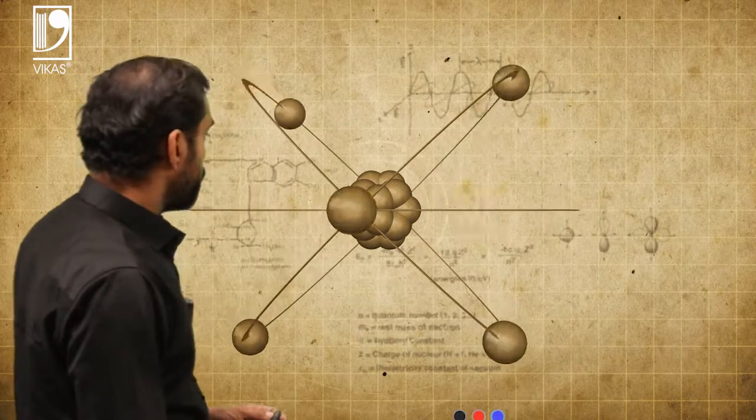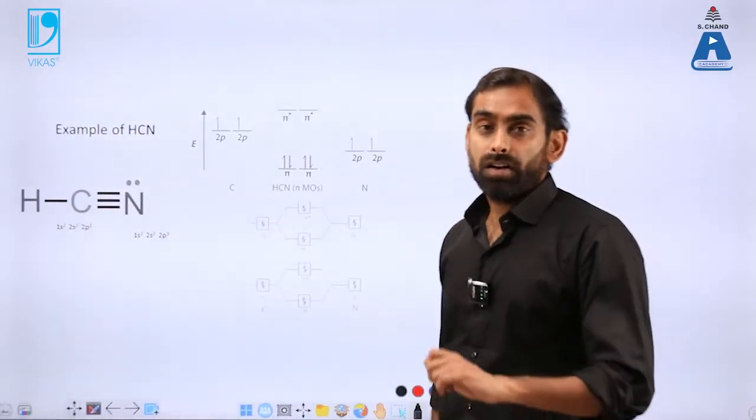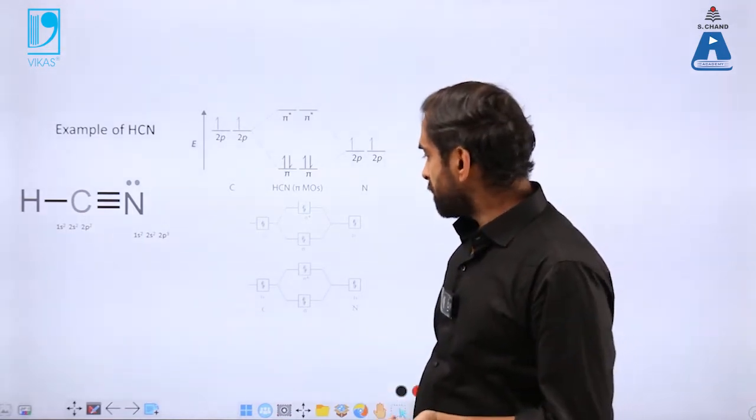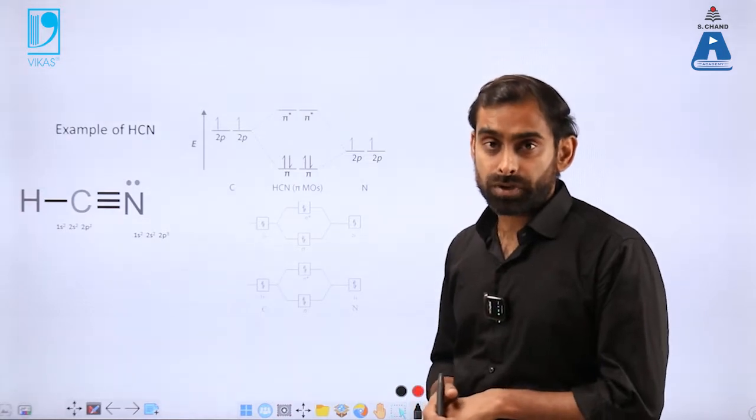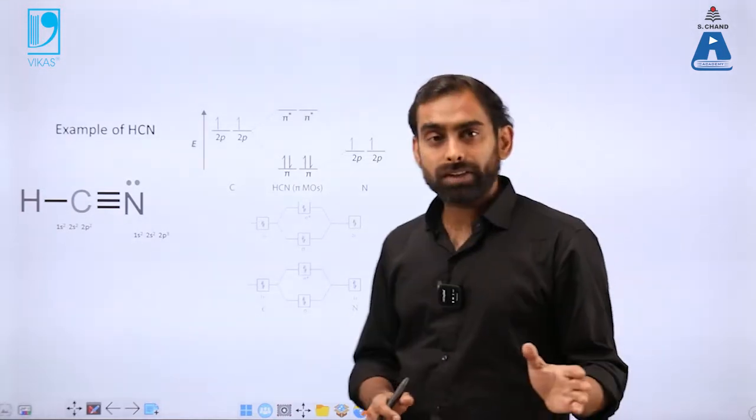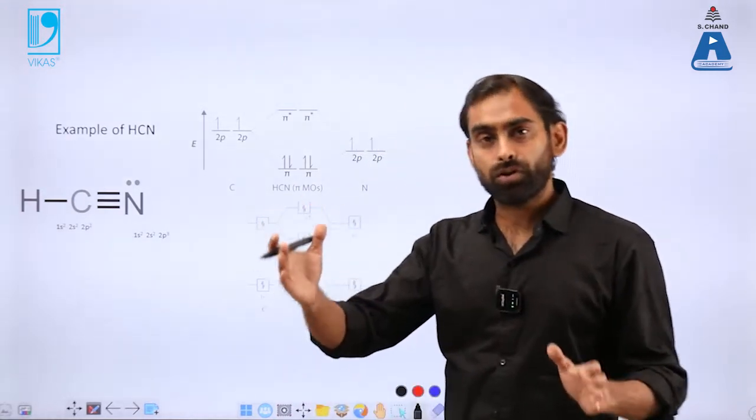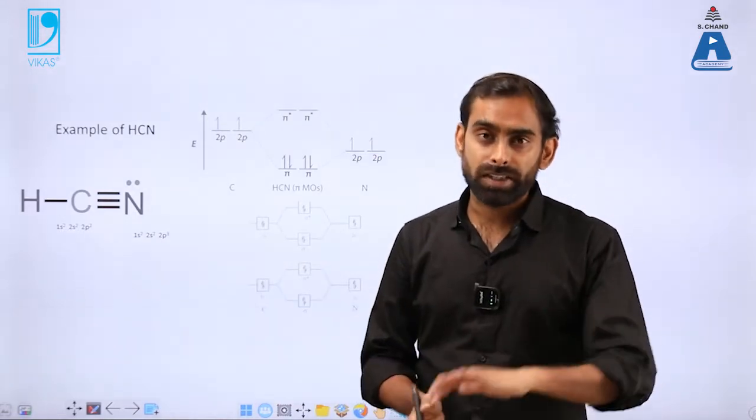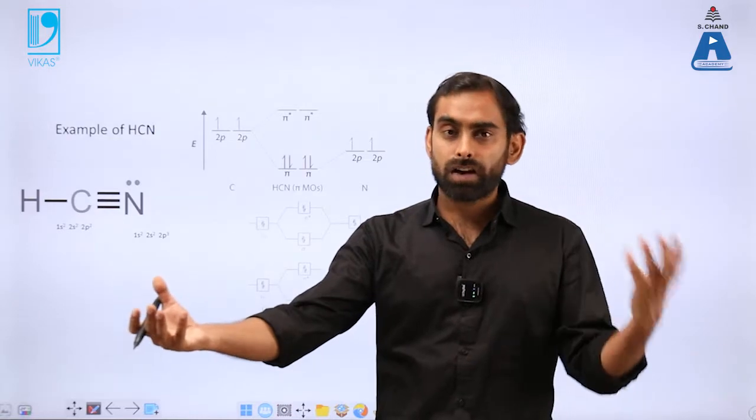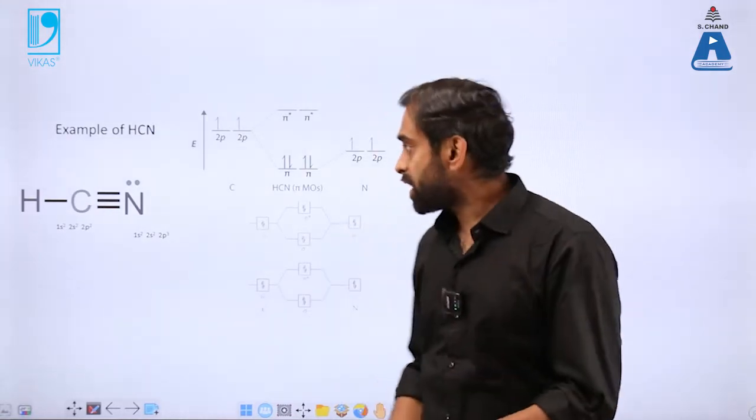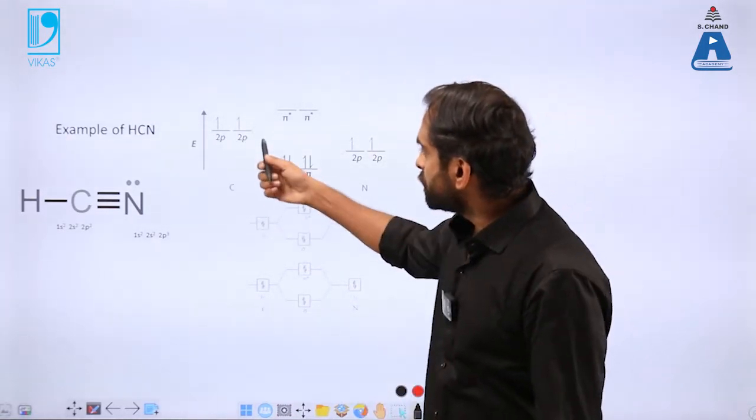Now we will look at a few more examples, especially the non-similar atoms, that means heteroatomic molecules or heteroatomic groups. If you remember in the last video, we talked about two carbon atoms combining together in ethane and ethene. So when on one side you have one carbon and on another side you have again carbon, then the energy levels will be the same.